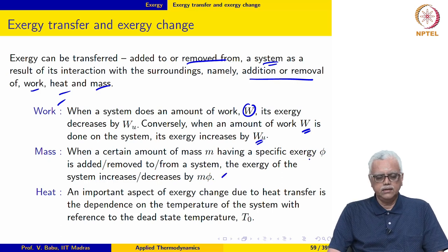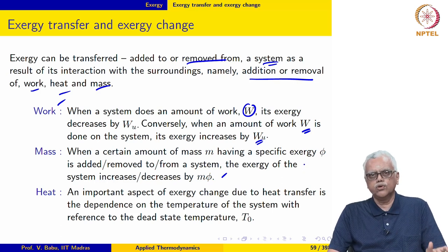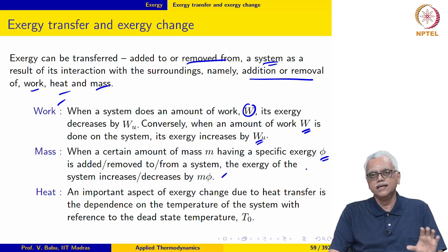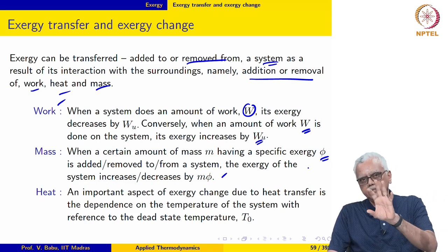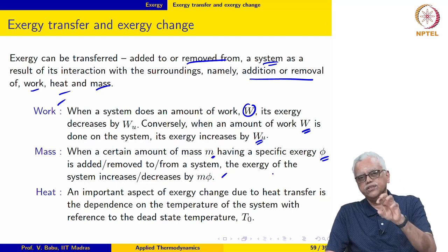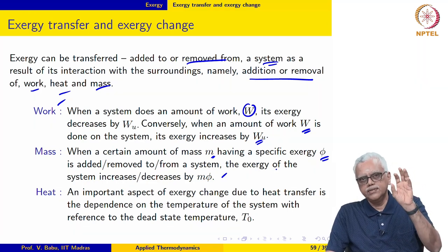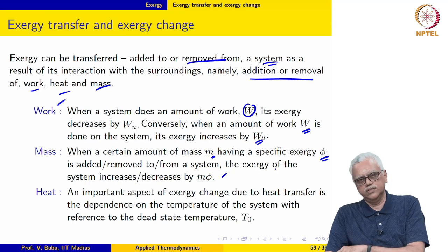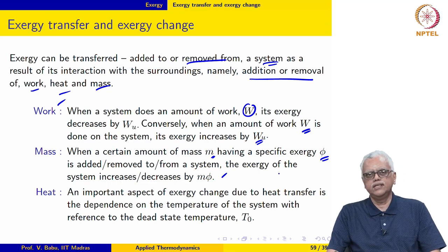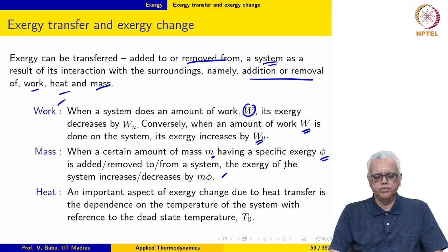Addition or removal of mass to a system also causes an exergy change. If we have a certain amount of mass with specific exergy φ, then adding mass m to the system increases the system's exergy by m times φ. If that much mass is removed from the system, then the exergy decreases by that same amount. This is relatively straightforward to calculate.